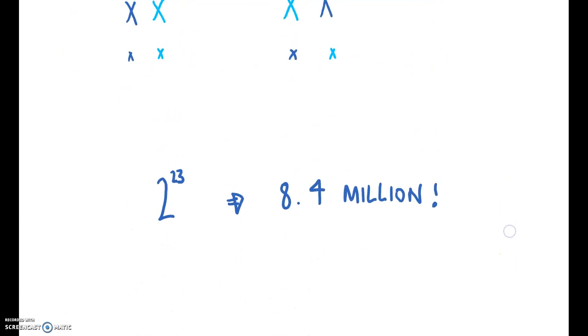In humans, because we have 23 chromosomes, that means there are two to the power of 23 or 8.4 million different possible gametes that we could make, looking at all of the different ways that we could align our chromosomes due to independent assortment. And that consequently is a hugely important mechanism for increasing variation.